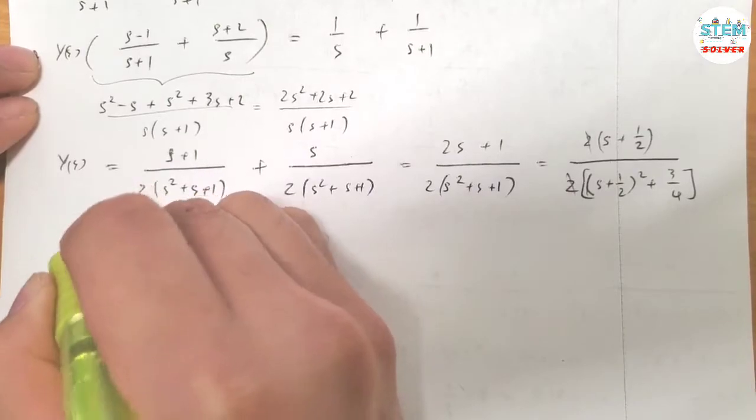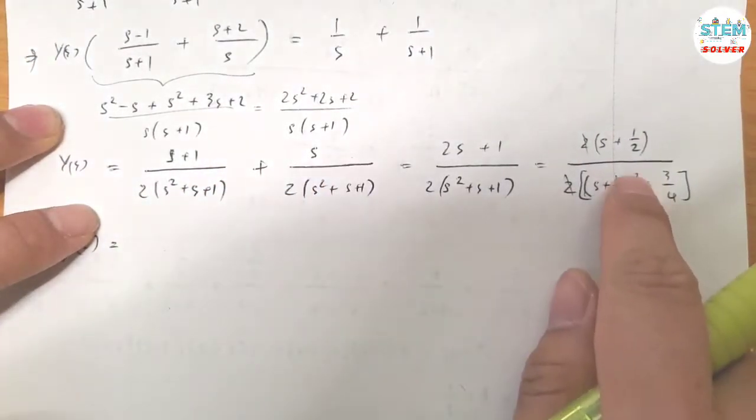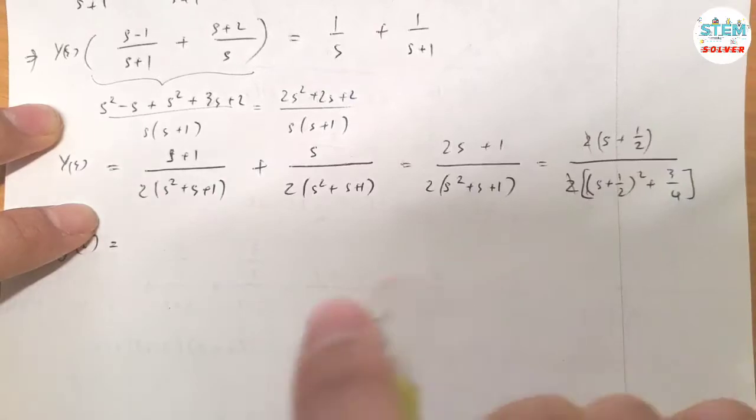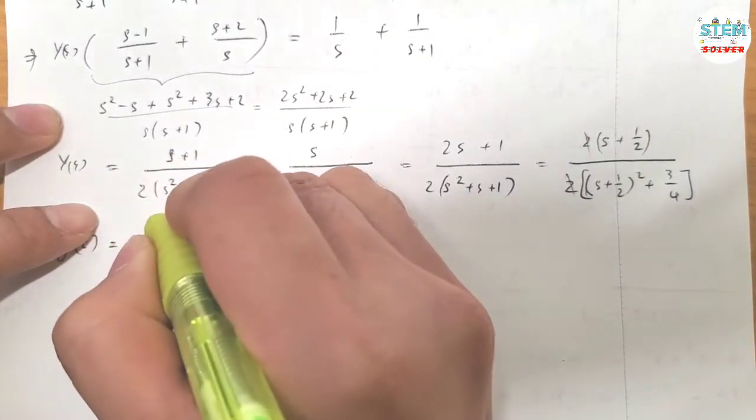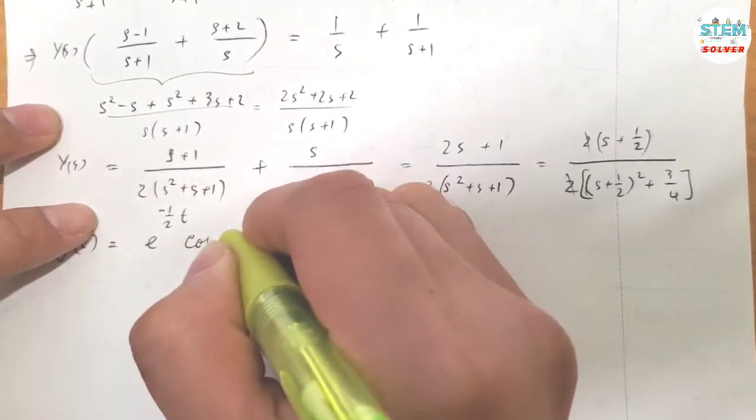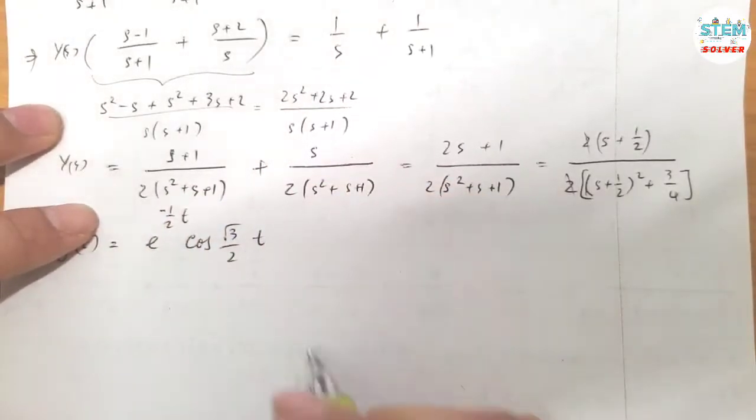Apply the inverse on both sides. So this is a cosine function. That gives me e^(-1/2·t) cos(√3/2·t).